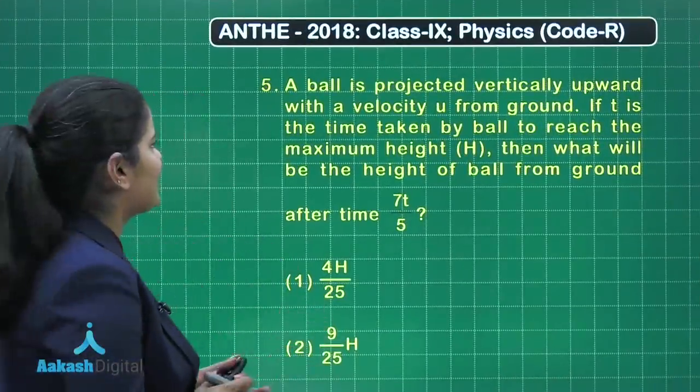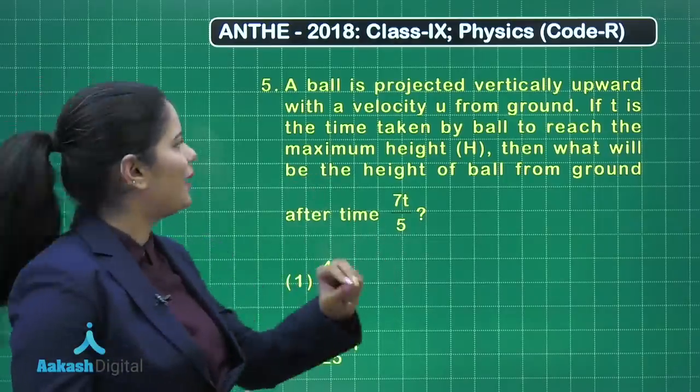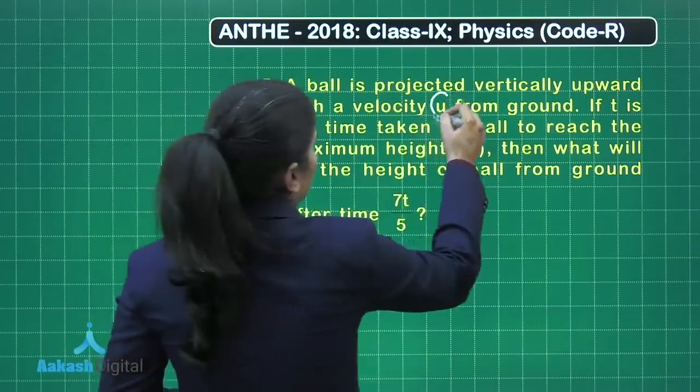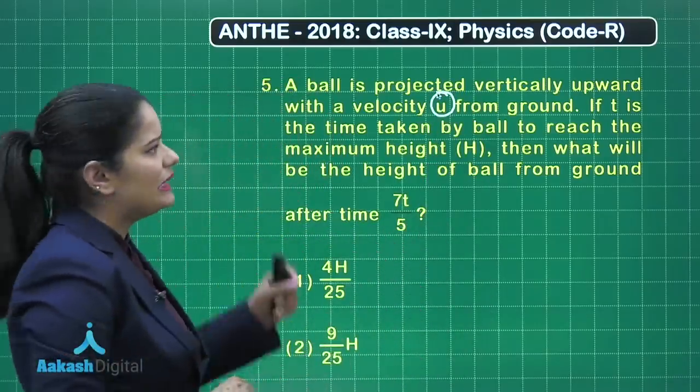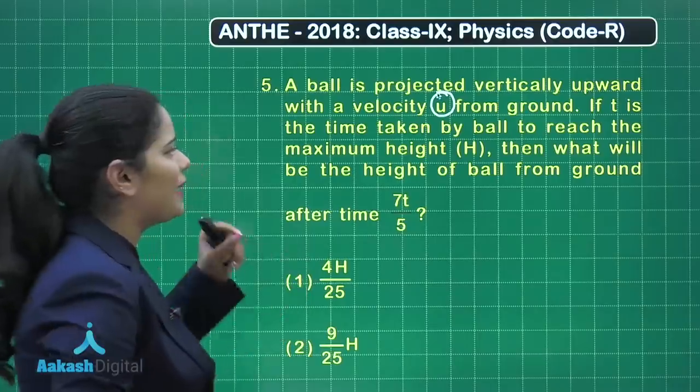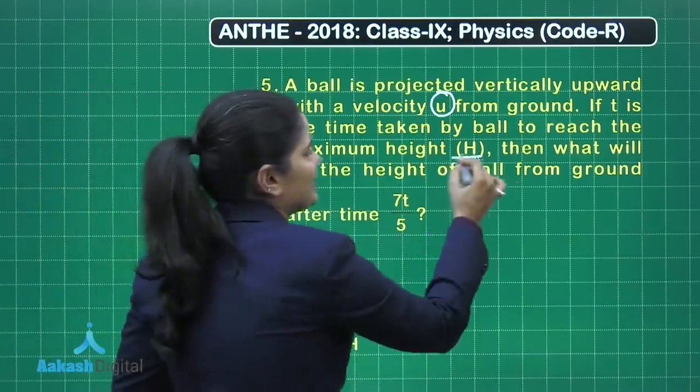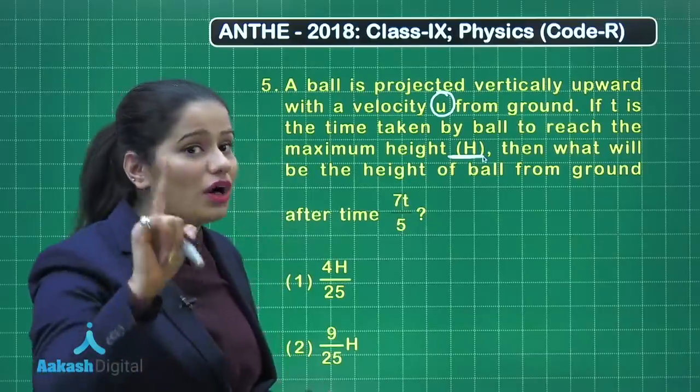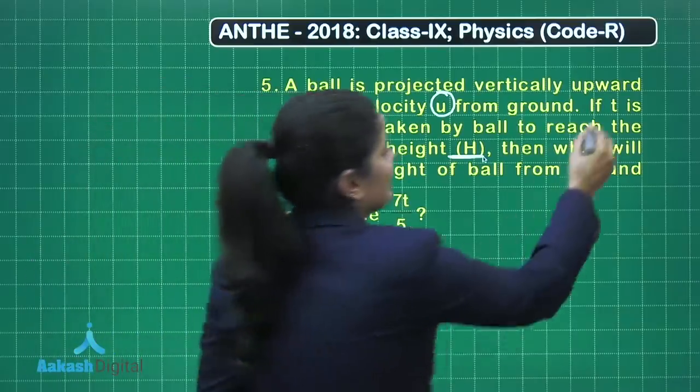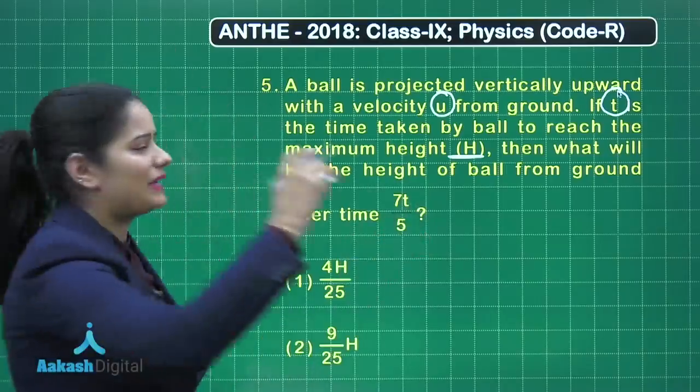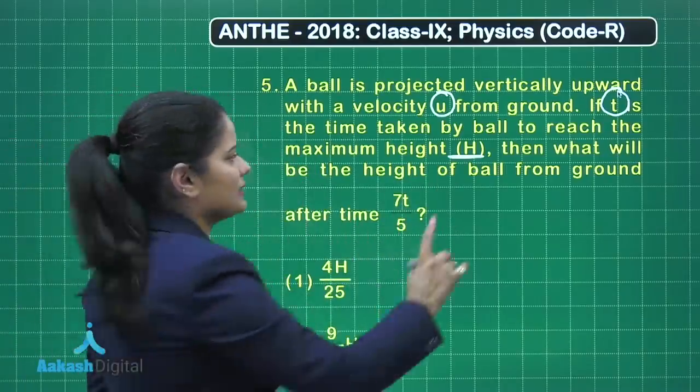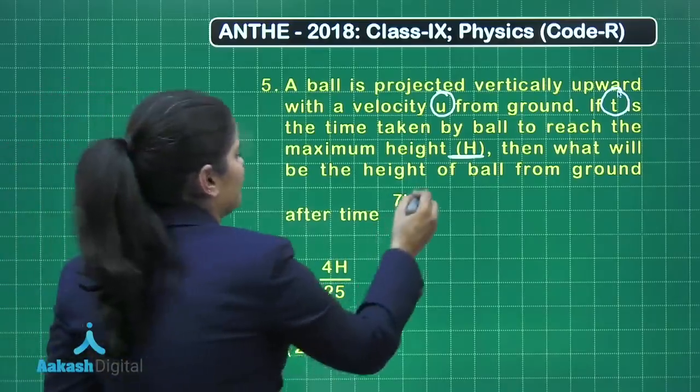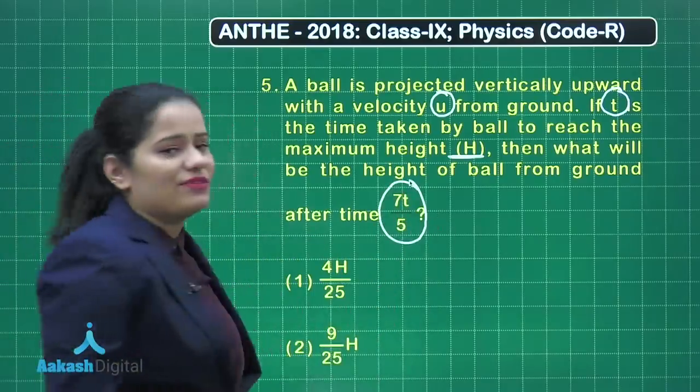Let's take up this question. This says a ball is projected vertically upward with a velocity U. We are projecting the ball in the upward direction with velocity U from the ground. If t is the time taken by the ball to reach the maximum height h, we are given the maximum height h and the time. That is not the time of flight. This is the time taken by this ball to reach this maximum height h. Then what will be the height of the ball from the ground after time 7t by 5?